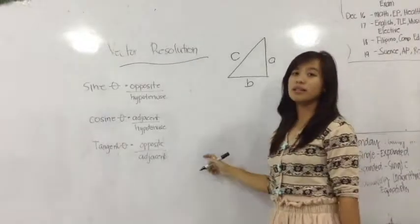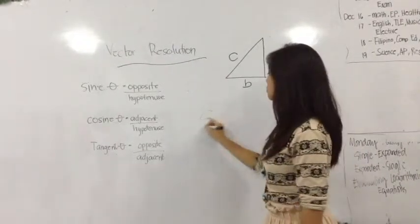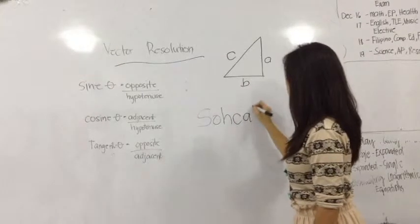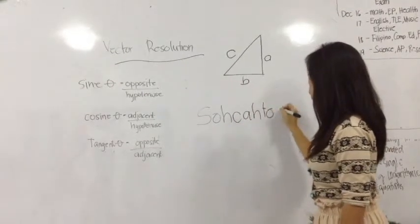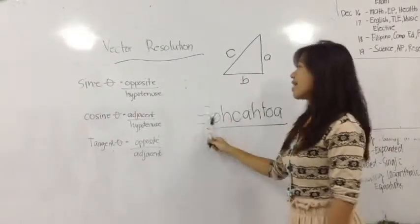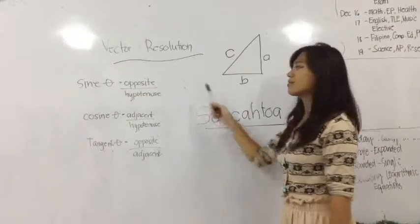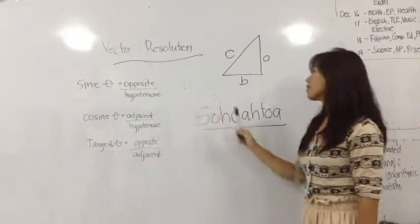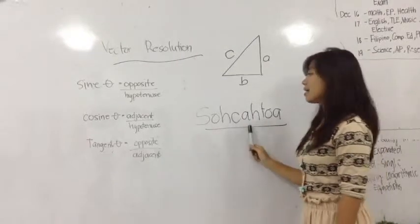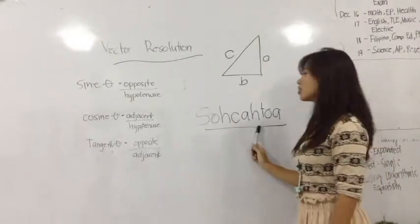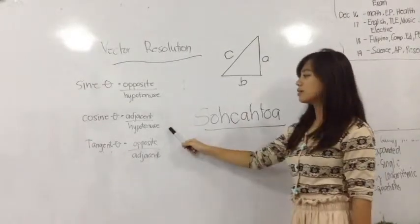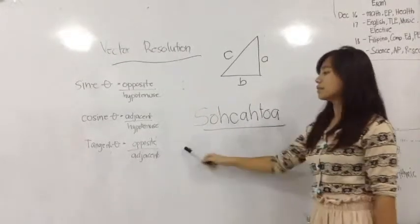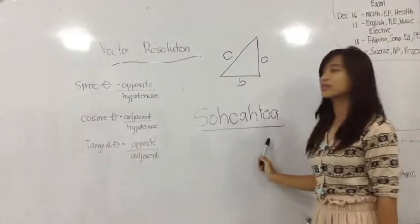These formulas are also known as SOH-CAH-TOA. S stands for sine, O stands for opposite, and H stands for hypotenuse. C stands for cosine, A stands for adjacent, H stands for hypotenuse. T stands for tangent, O stands for opposite, and A stands for adjacent.